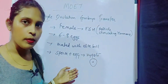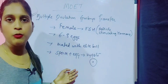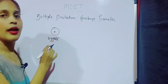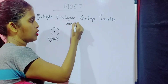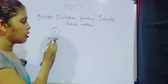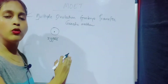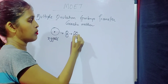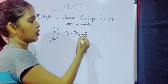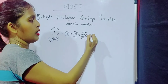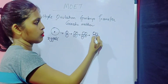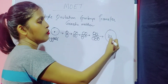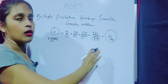Since the zygote is a single cell, continuous mitosis — cell division — takes place inside this female, who is now the genetic mother, because her genes are involved. The zygote undergoes division: one cell becomes two, then four cells, then six, then eight, and the developmental stages continue.